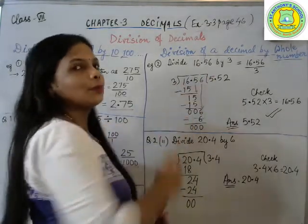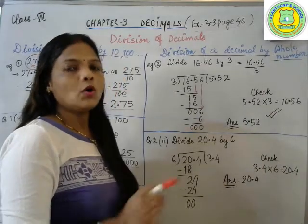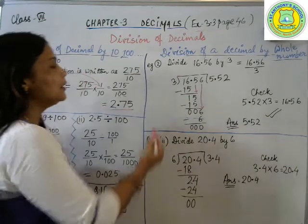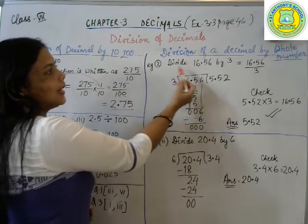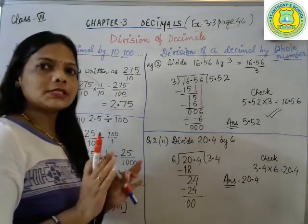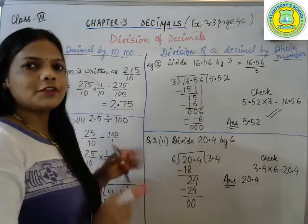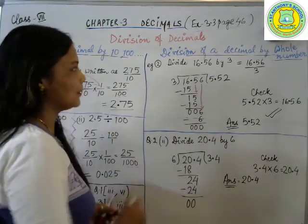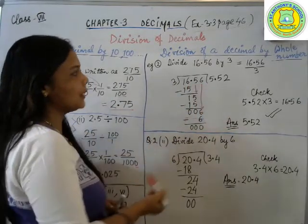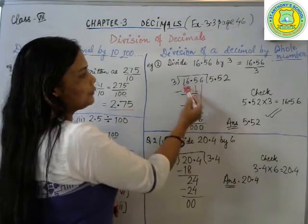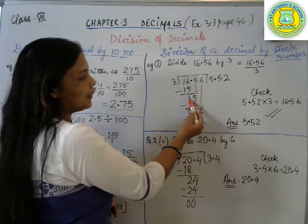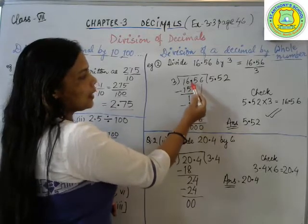Now we will see division of decimal by a whole number. Whole number can be apart from your ten, hundred, and thousand. It can be any number. Just see one example: divide 16.56 by 3. We will follow the same rules of division as we have studied earlier. So 3 and 16.56, as you know how to write. So how many times it will go? Three fives are 15.